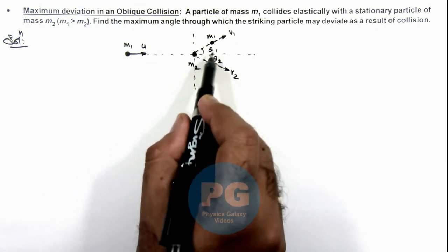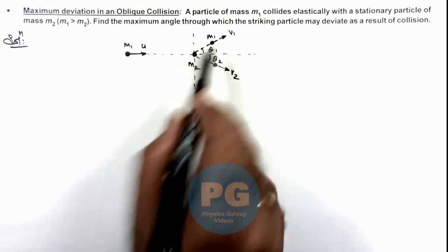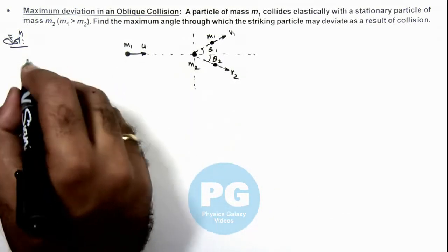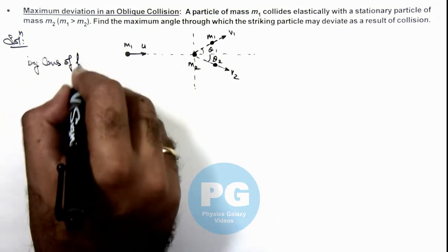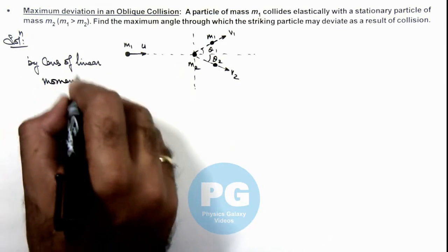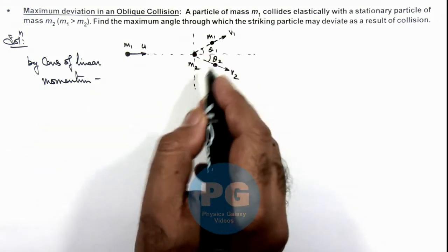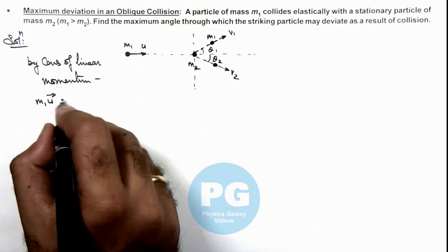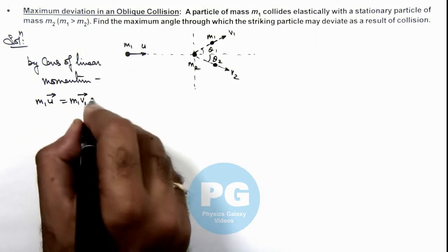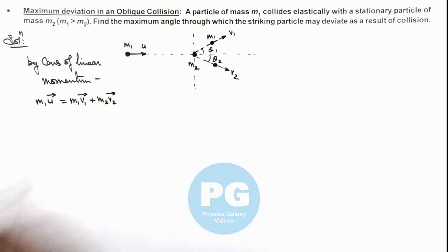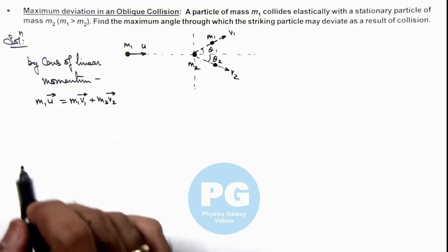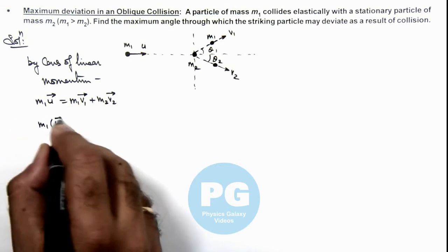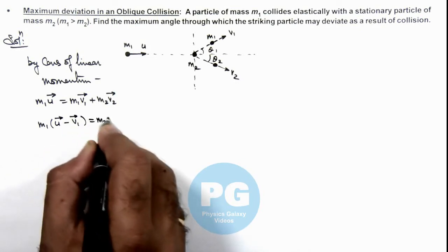The maximum value of θ₁ we need to calculate, which is the angle through which the striking particle is deviating. For this we can conserve momentum and energy because the collision is elastic. By conservation of linear momentum, in vector form: m₁u⃗ = m₁v⃗₁ + m₂v⃗₂. Rearranging: m₁(u⃗ - v⃗₁) = m₂v⃗₂. Since u⃗ and v⃗₁ are at angle θ, the magnitude gives m₁√(u² + v₁² - 2uv₁cosθ) = m₂v₂.